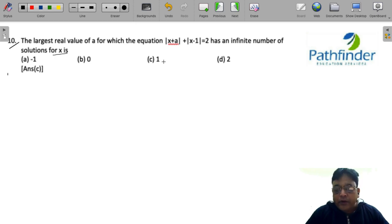Now you need to know what will give you infinite number of solutions for x. If you want infinite number of solutions for x, you have to ensure that this equation becomes independent of x. So how will that happen?